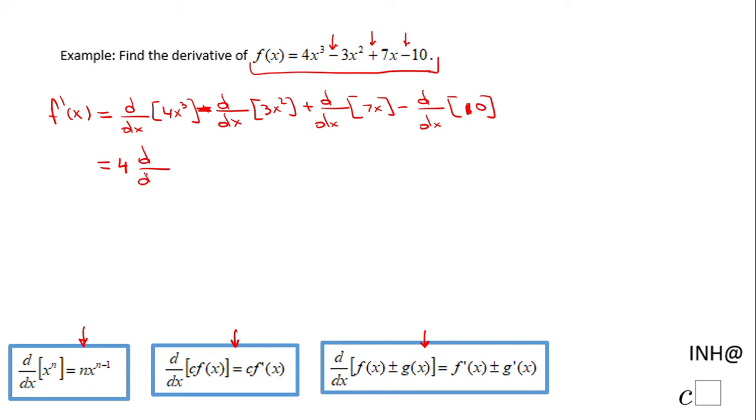Which tells me I'm going to move the 4 up front and I'm going to do the derivative with respect to x of x³ minus I'm going to move the 3 up front and I'm going to have the derivative with respect to x of x² plus I'm going to move the 7 up front and I'm going to hit the derivative with respect to x of x.